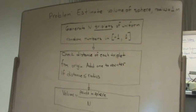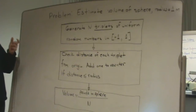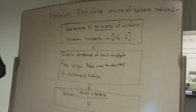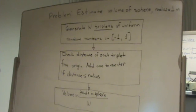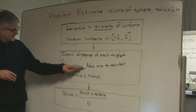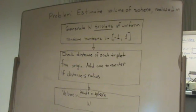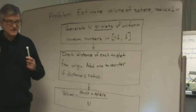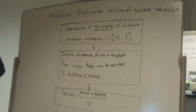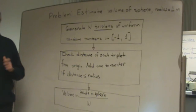Every triplet defines a point in space. We'll check if this point is within the sphere. If it is in the sphere, we'll update a counter which counts the number of points that are within the sphere. All the triplets define points that are in a cube with dimensions two by two by two, so the volume of that cube is eight.